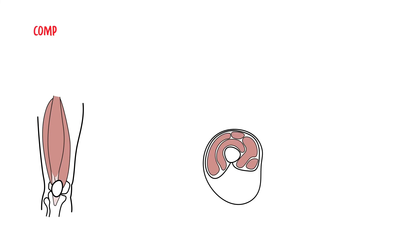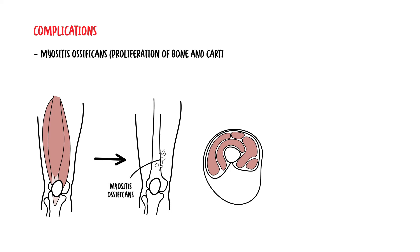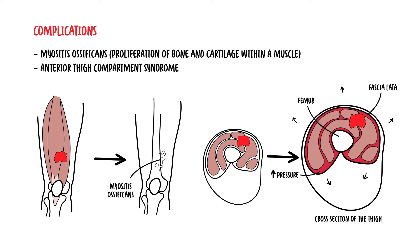There are complications of quadriceps contusions. This includes myositis ossificans, which is the proliferation of bone and cartilage within a muscle after the formation of an intramuscular hematoma, as well as anterior thigh compartment syndrome, which is a medical emergency.